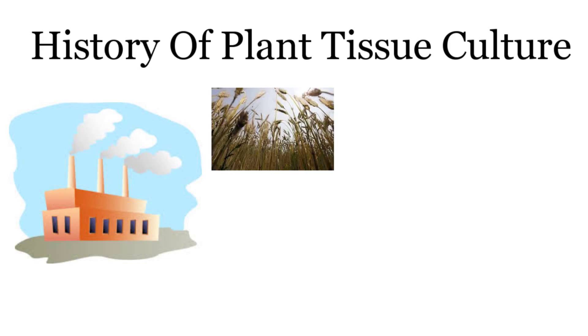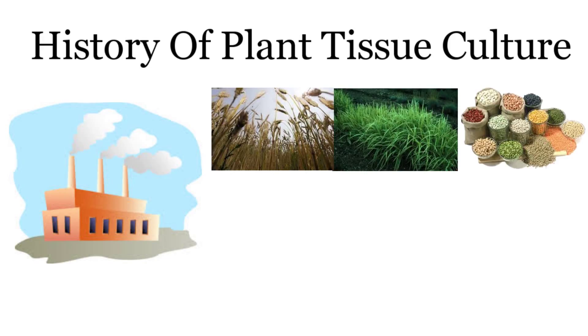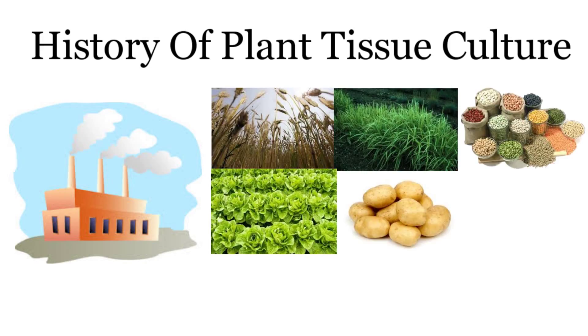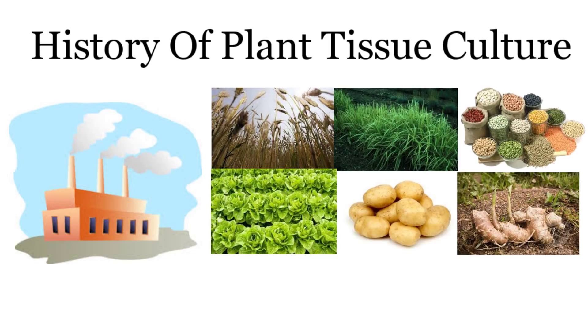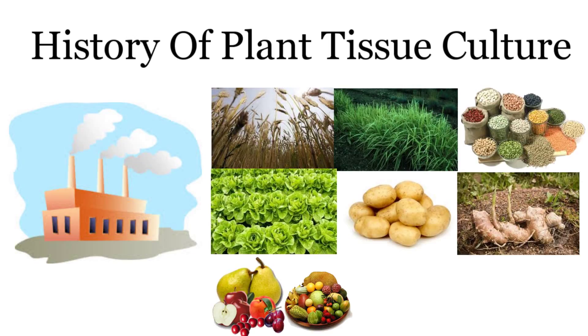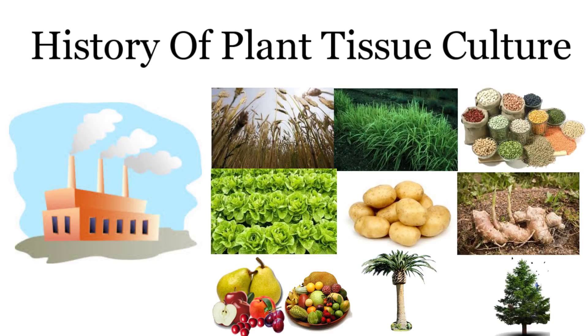These plant species included cereals and grasses, legumes, vegetable crops, potato and other root and tuber crops, oilseeds, temperate and tropical fruits, plantation crops, forest trees, and ornamentals.